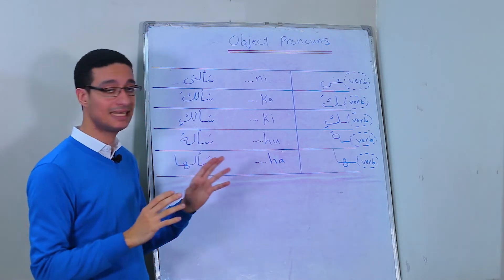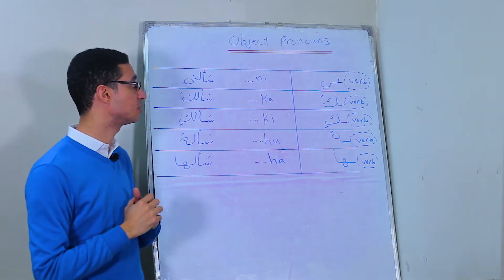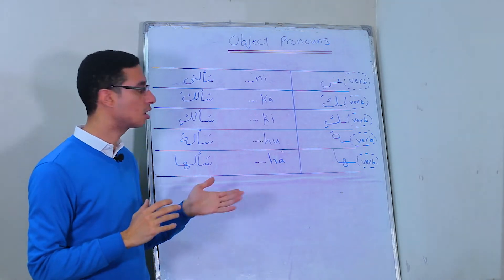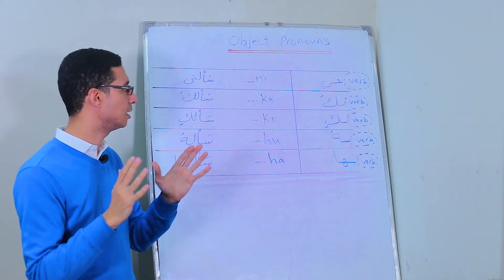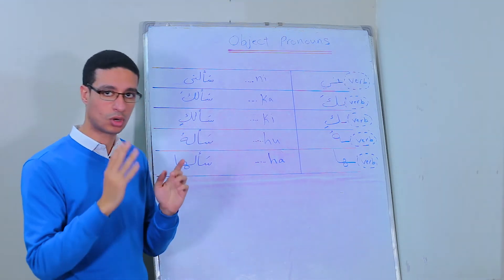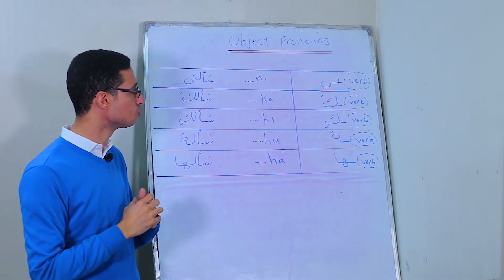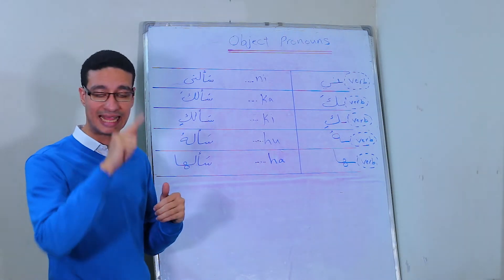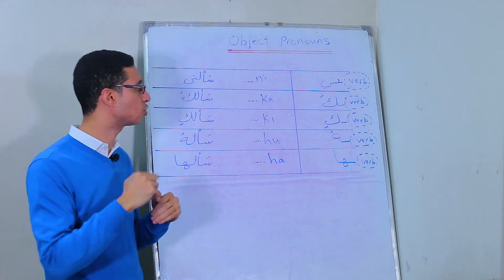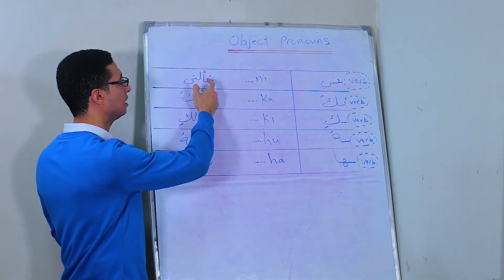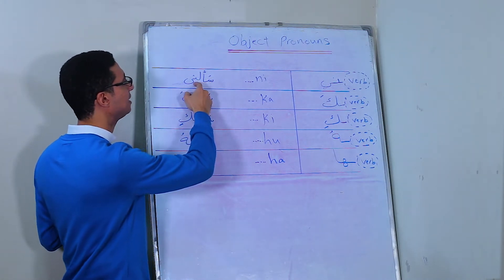Of course, if this verb doesn't need a preposition. This is very important because there are some verbs that need a preposition like the verb قال. قال means to say. قال لي, the verb يقول or قال, means to say. It has to have a preposition: لي. يقول لي or قال لي. He said to me or he says to me. But سأل, he asked, doesn't need a preposition. So it's here: سألني.